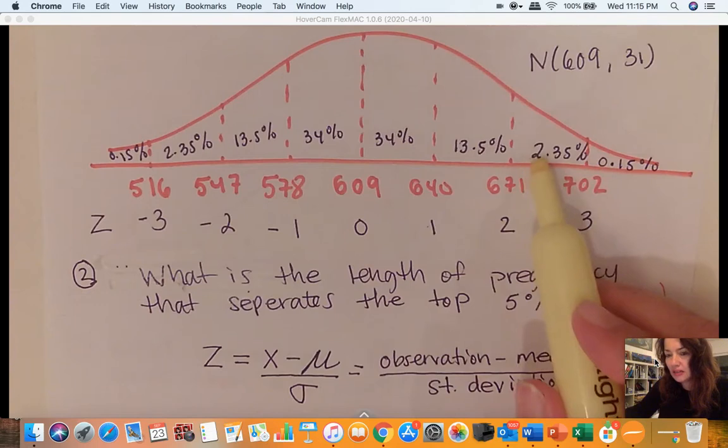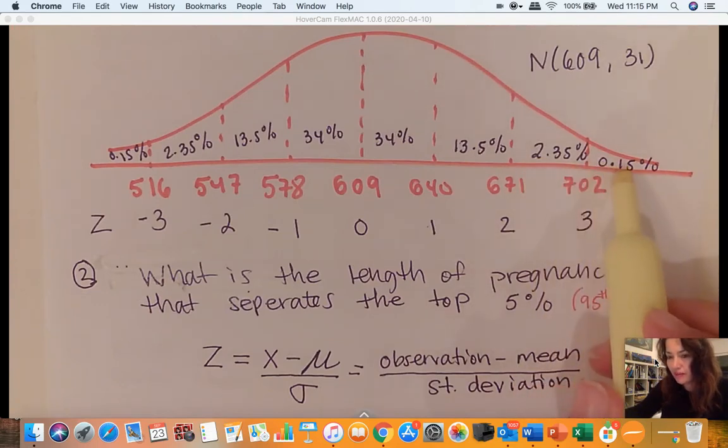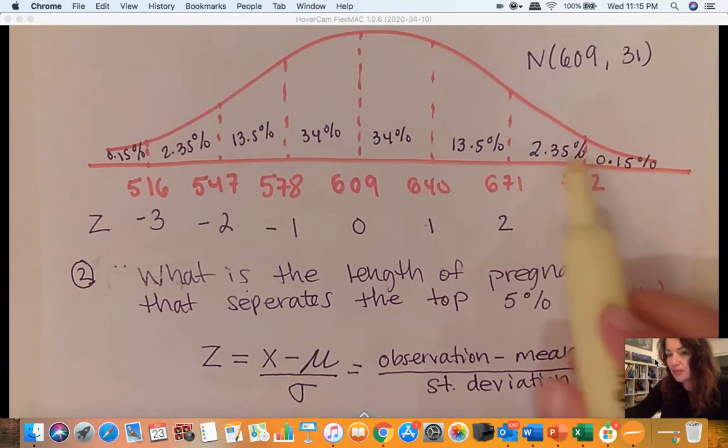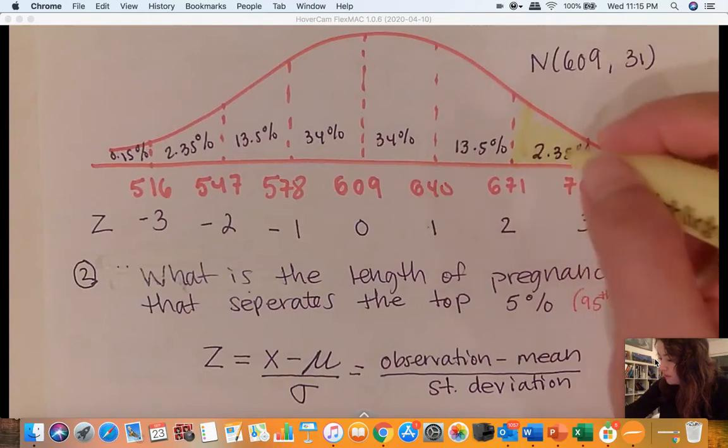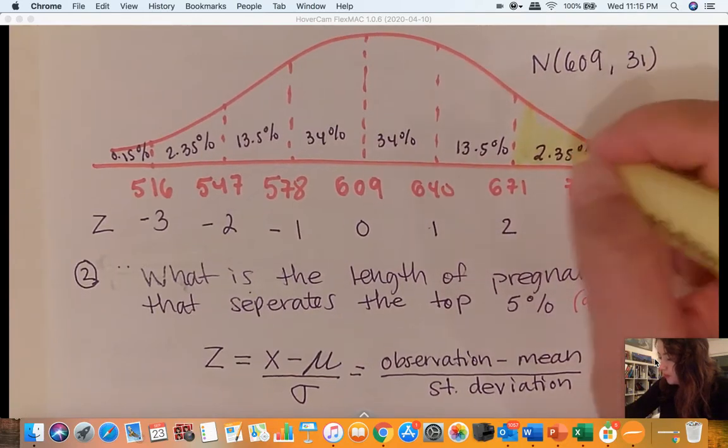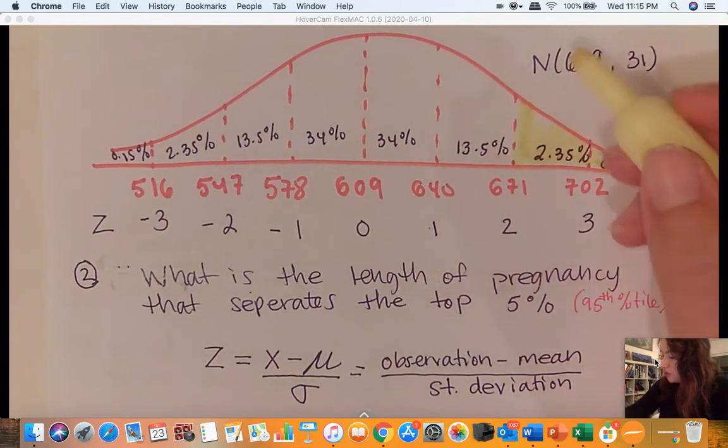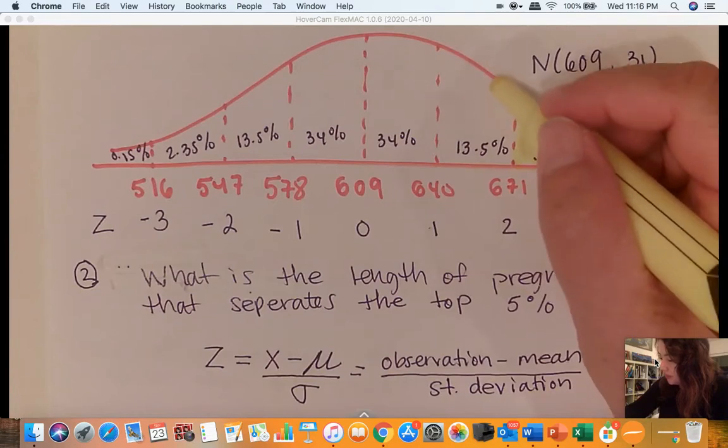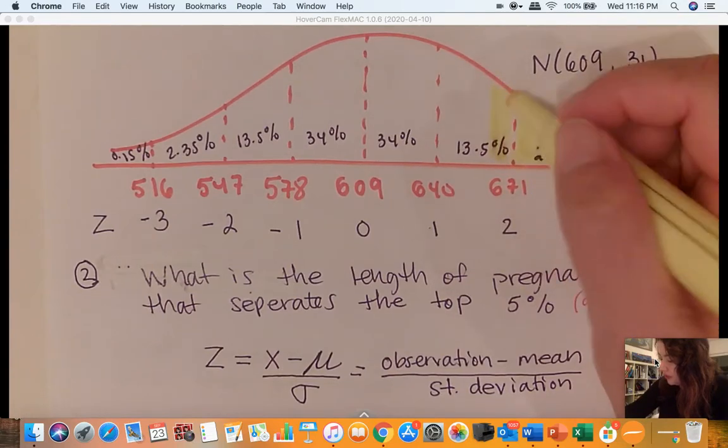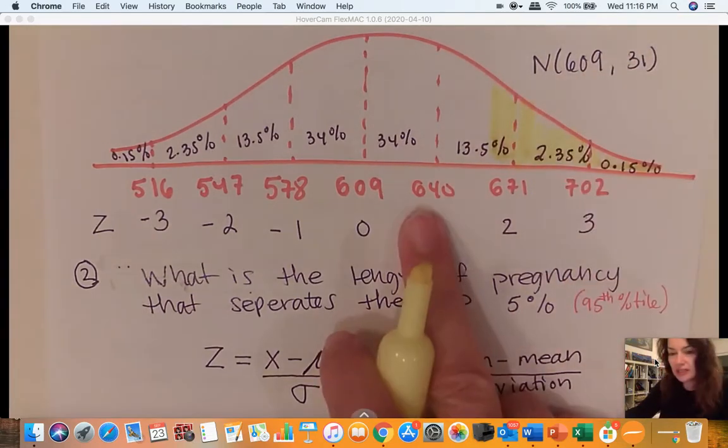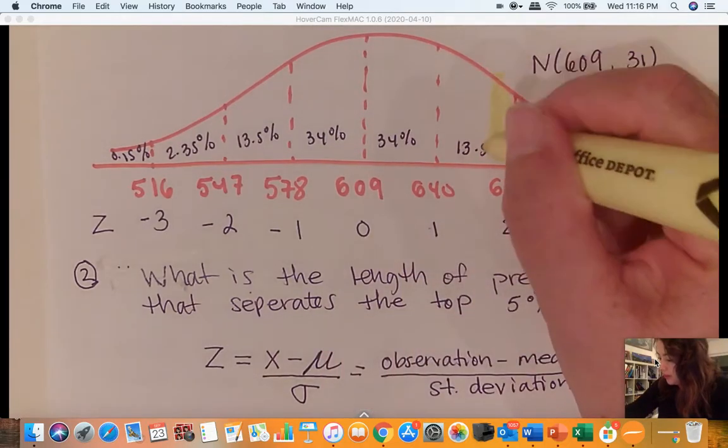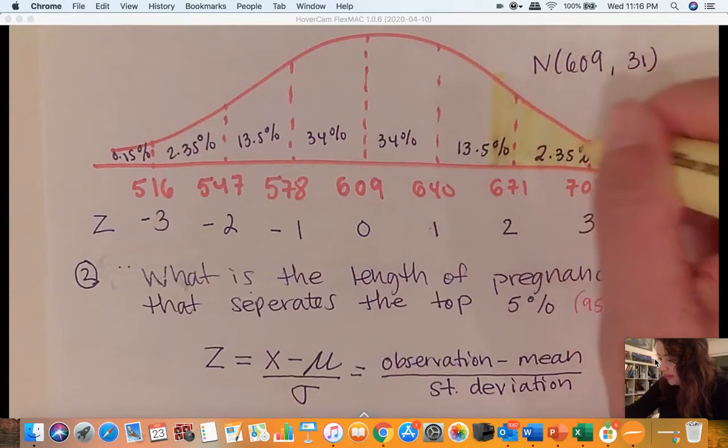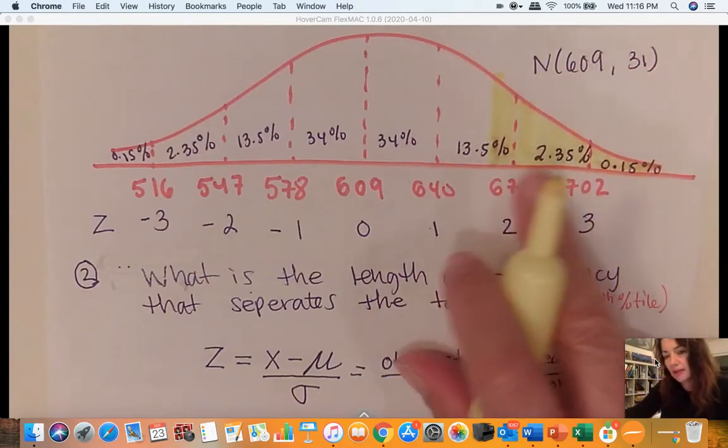I can see this is 2.35%, 0.15%, so we have 2.5% right here. We already know this is the top 2.5%, but we want the top 5%. So we can estimate it to be somewhere in this region, between 640 and 671.